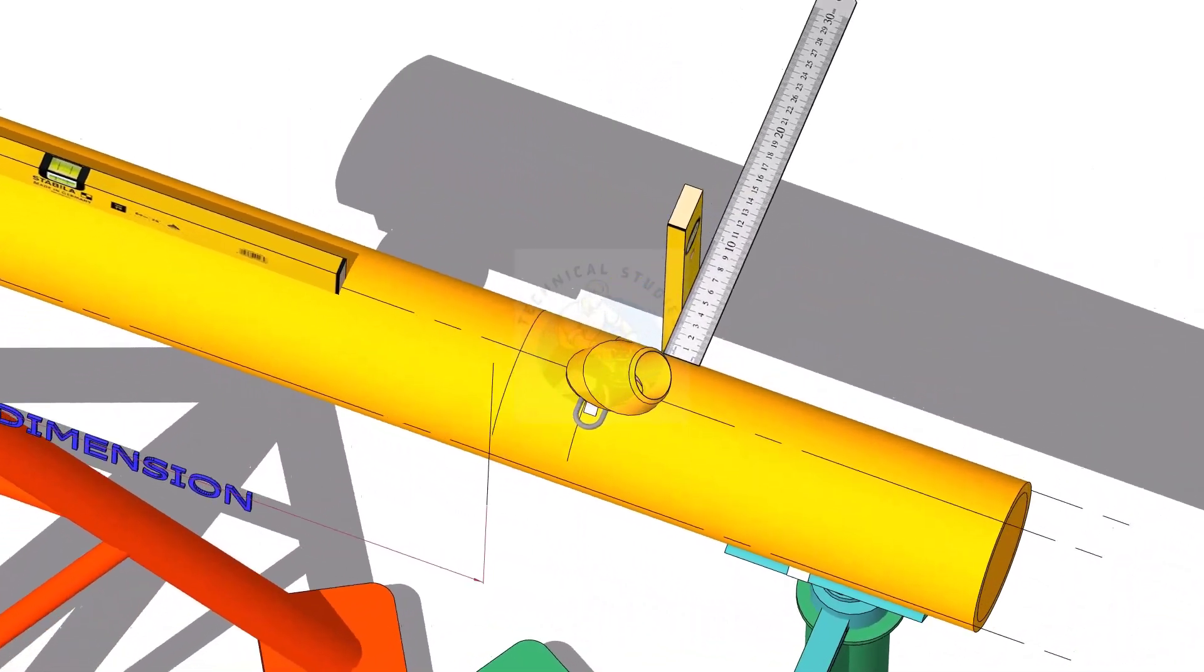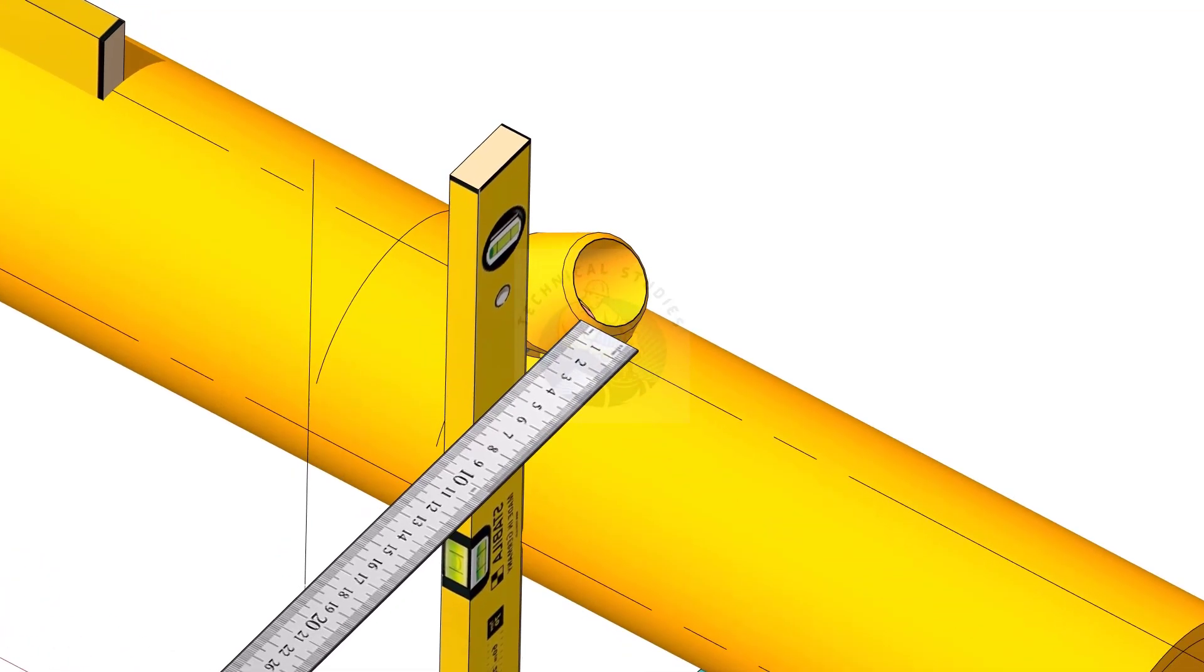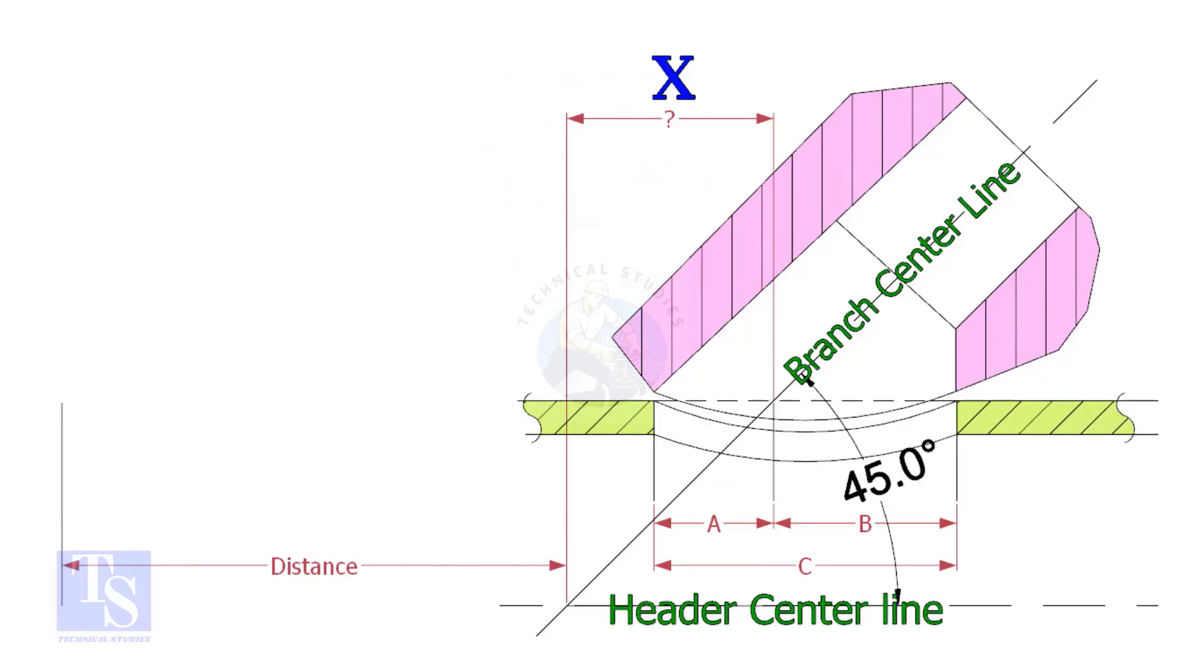Welcome to the technical studies. In this video, I will show you how to fit up a laterolette on a pipe. Most commonly, laterolettes are used for 45 degree branch connections.